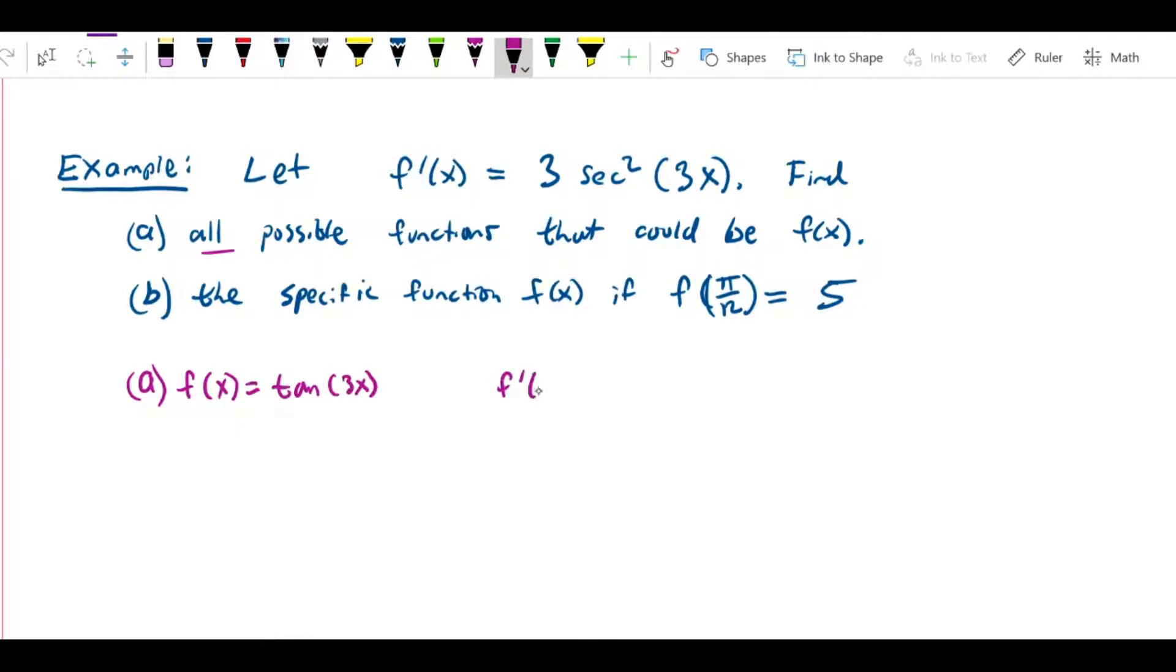...then if I differentiate that by the chain rule, I would get sec²(3x), and then by the chain rule I have to multiply by the inside, that gives me 3 sec²(3x). So this is a perfectly good candidate for the answer to part (a).